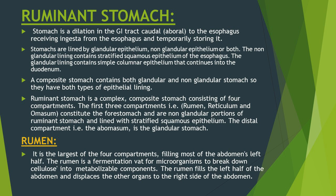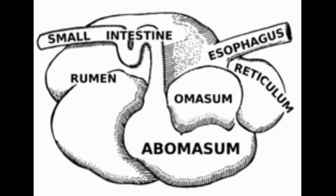The lining of the stomach of ruminants and horse contains both glandular epithelium and non-glandular epithelium. The non-glandular epithelium is stratified squamous epithelium, while the glandular lining contains simple columnar epithelium. The stomach of ruminants is called composite or compound stomach, also called four stomach. Ruminants don't have four stomachs but have a single stomach divided into four compartments: rumen, reticulum, omasum, and abomasum.